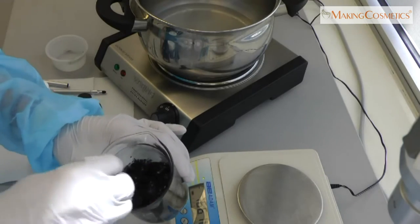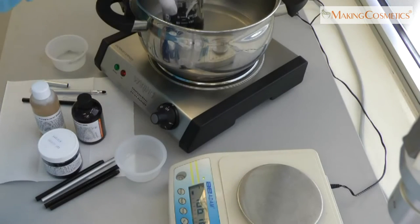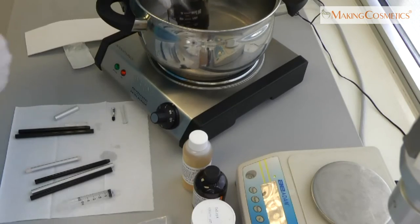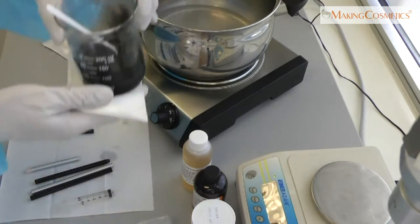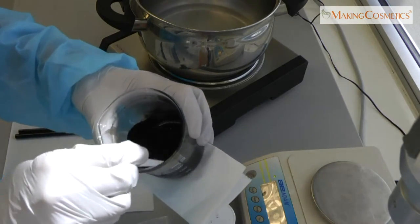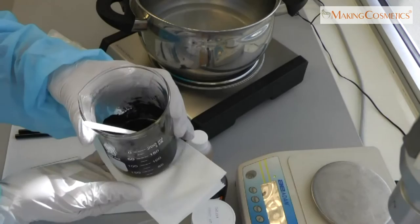This is the base mixture that we're going to use, and we're going to melt it in a hot water bath. Our pencil mixture is melting. It's not quite there yet. It has to fully melt at about 160 Fahrenheit, about 70 degrees Celsius.